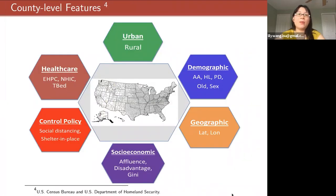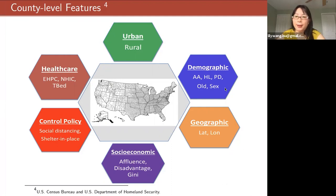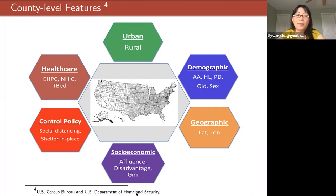Next I want to talk about county-level features. There are very different characteristics for each county in the United States, so we tried to put this information into our analysis. We studied quite a lot of county-level features, divided into six groups: demographic information, geographic information, socioeconomic information, control policy enacted by local government, health infrastructure, and urban-rural factors. We collected this data from the U.S. Census Bureau and the U.S. Department of Homeland Security.